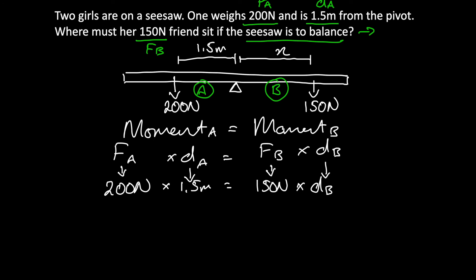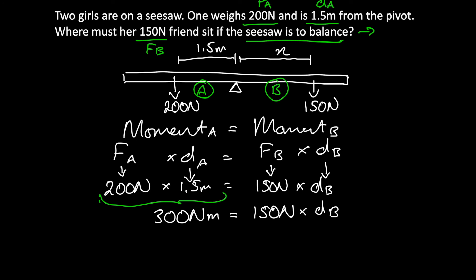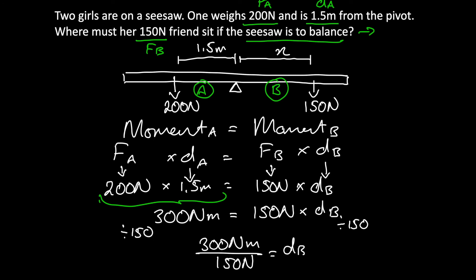Let's go about solving this. 200 times 1.5 — putting that into our calculator gives 300 newton meters — which is equal to 150 newtons times the distance of B. In order to solve for the distance of B, I'll divide by 150 on both sides. That gives me 300 newton meters divided by 150 newtons, so the distance of B is equal to 2 meters.